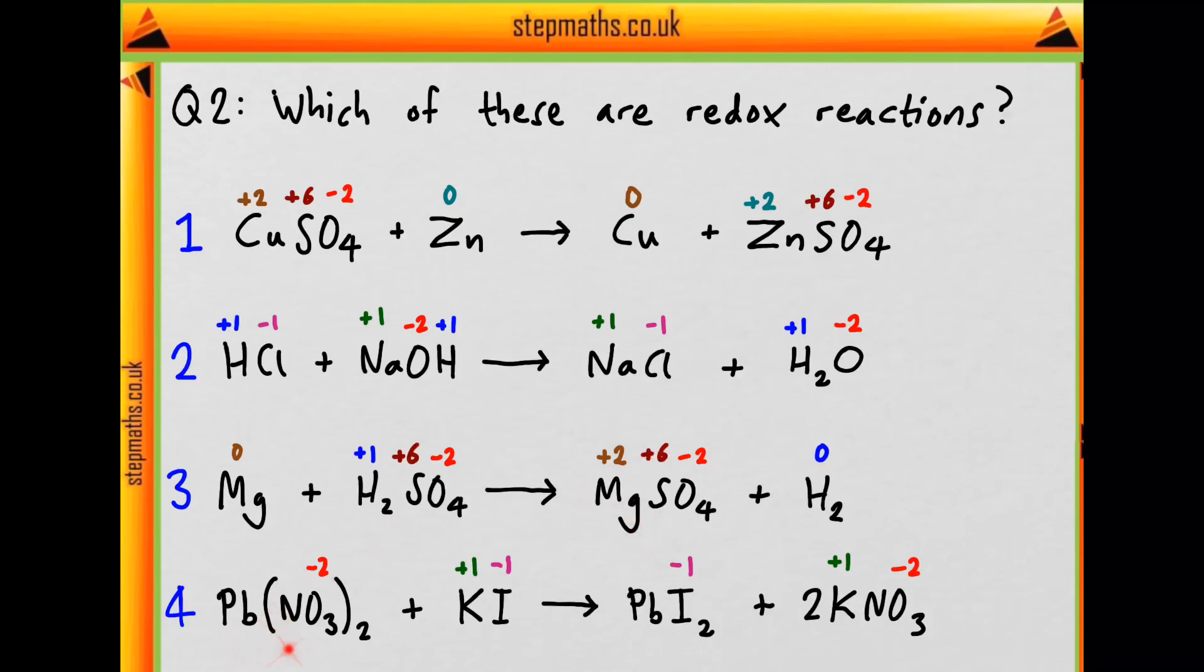And finally, what about lead in this? Well, we know the charge of the nitrate ion is minus one, and we have two of them, so lead has to be plus two. What about the lead here? Well, we know iodide is minus one and we have two, so again lead is plus two. So that just leaves nitrogen that's not completed.